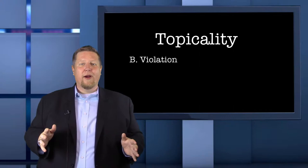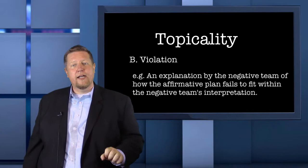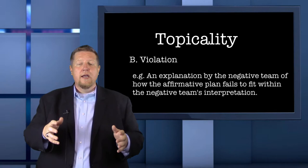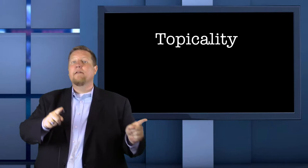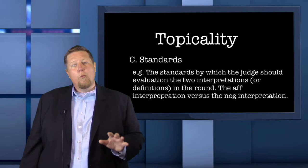The next part of a topicality argument is the violation sub-point. It is here where the first negative speaker will describe exactly how the affirmative plan violates the definition. This can be accomplished in only a few sentences, but the goal is to be clear, concise, and convincing. By the end of the violation sub-point, everyone in the room should understand how you as the negative team define the word in the interpretation sub-point and why you believe the affirmative team violates it.